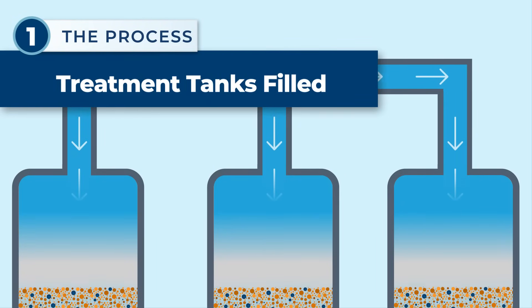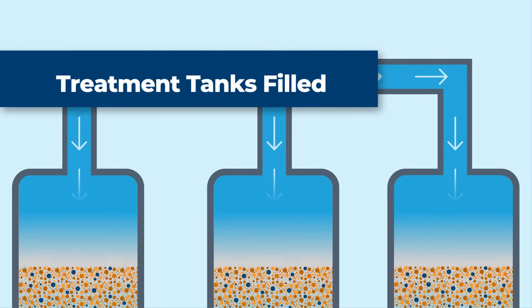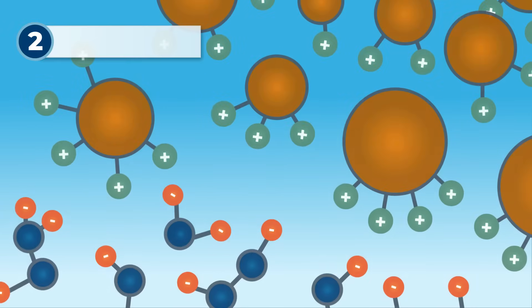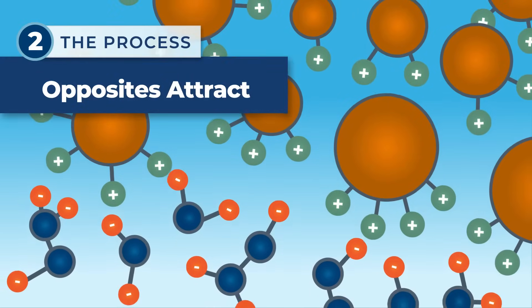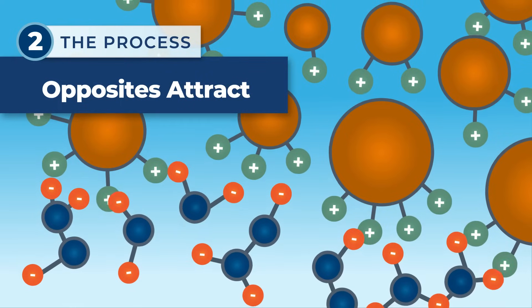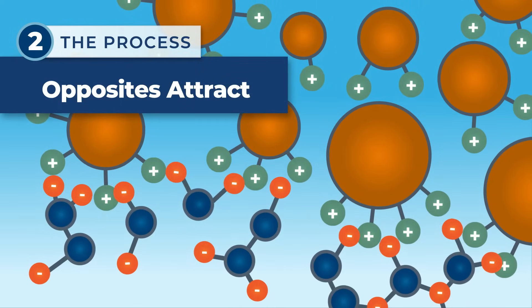Groundwater that has been exposed to PFAS is pumped into the ion exchange treatment tanks. As water filters through the ion exchange resins, the negative ions in the PFAS are attracted to the positive ions in the resin.